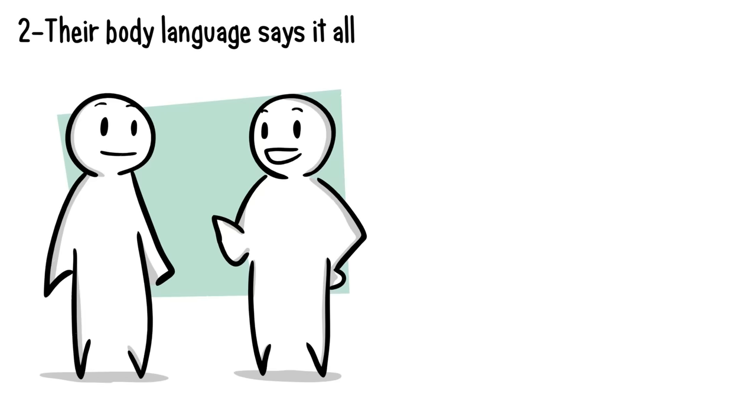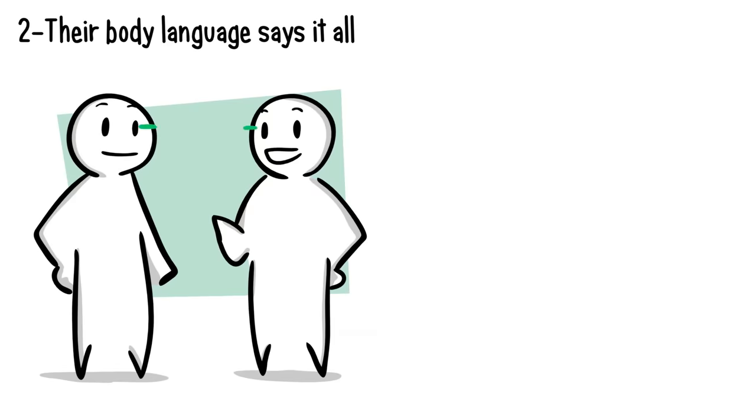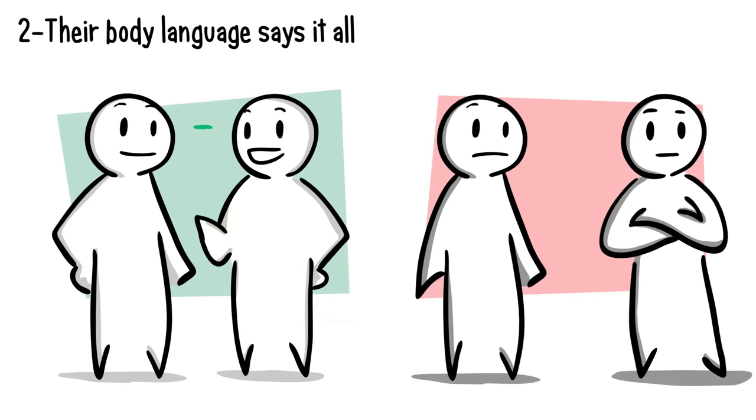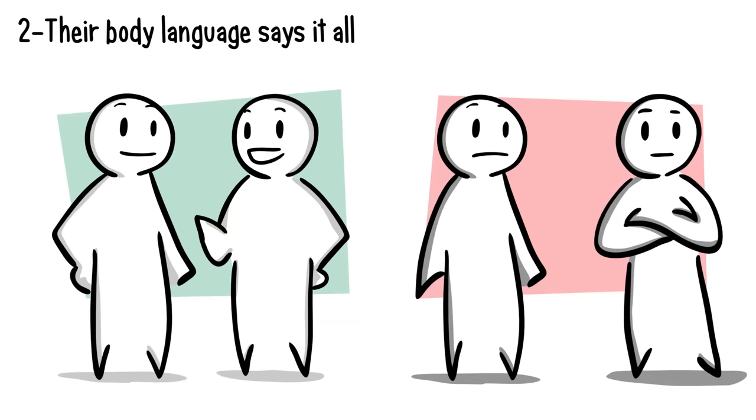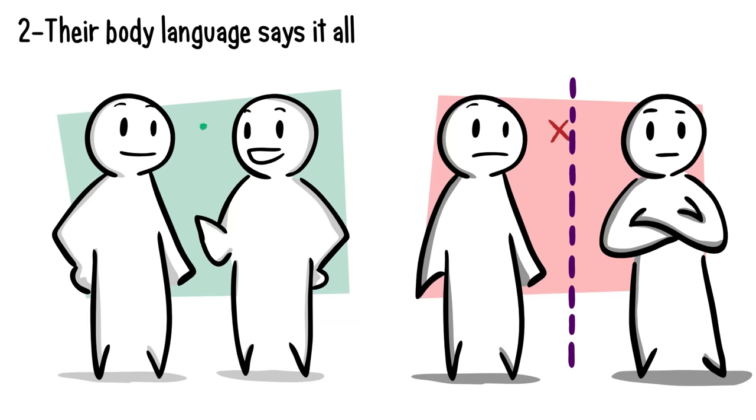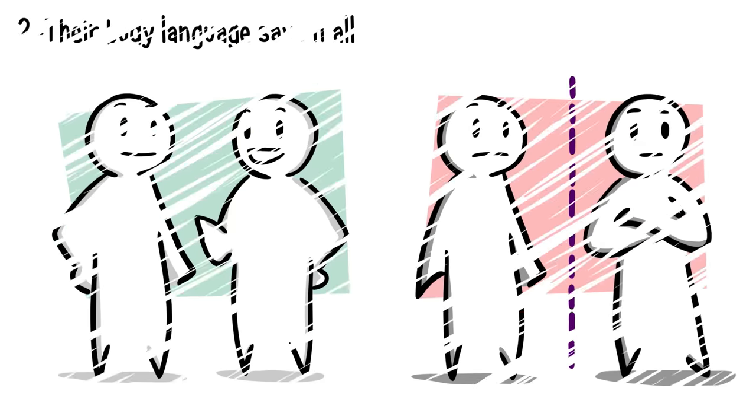Number two: their body language says it all. When we like someone, we have a tendency to make eye contact, mirror their body language, and lean in closer. But when someone dislikes you, they will avoid eye contact, cross their arms, and lean away from you. They do this to protect themselves from you, creating an invisible barrier that keeps you out. Harsh, right? But it's a common defense mechanism humans use.